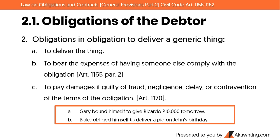The obligations are: A) to deliver the thing; B) to bear the expenses of having someone else comply with the obligation, under Article 1165 paragraph 2. For example, if Blake obliged himself to deliver a pig but ran out of pigs, the creditor may ask someone else to comply with Blake's obligation, but Blake — the original debtor — still bears the expenses.